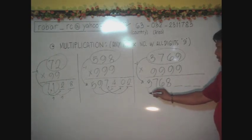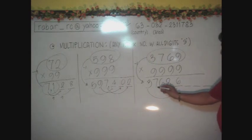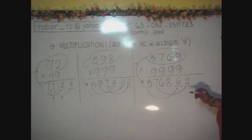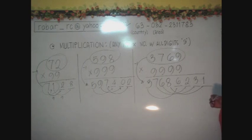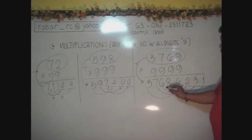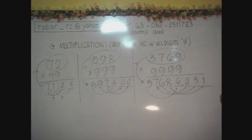To make this 1 to 9, 3 to 9, we need 6. To make 7 to 9, we need 2 and 6 to become 9. We need 3 and 8 to become 9. We need 1. So, therefore, our answer is 37,686,231.